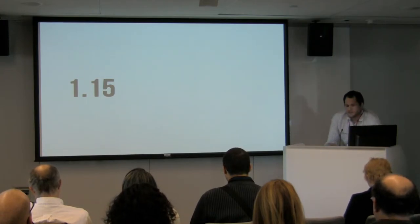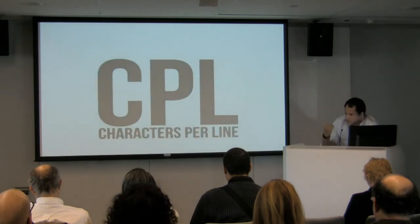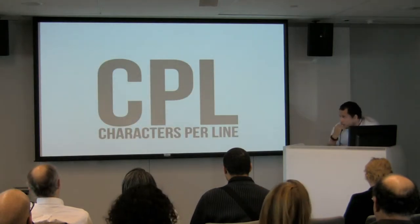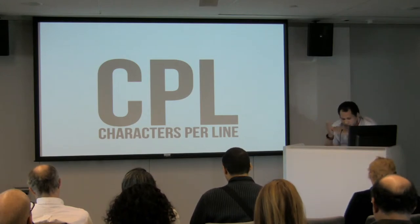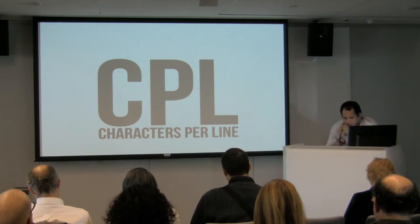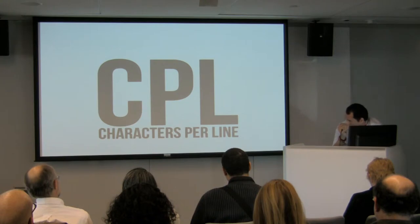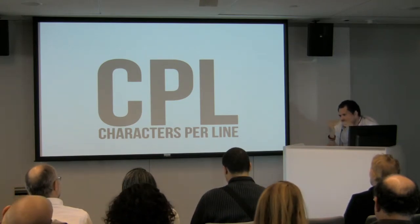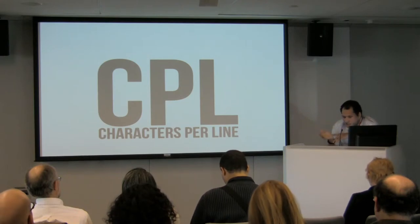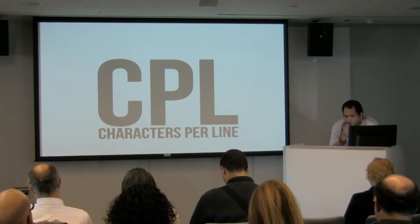The beauty of designing in the browser is you can test this rapidly. This relates to the amount of characters per line (CPL) at any given time across different sizes when resizing the window or on different devices. CPL is pretty important — you want to average around 60 to 75, some even say 100 characters per line, but I like to stay in the 50 to 65 range.